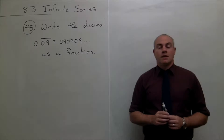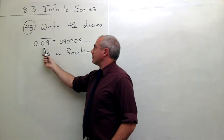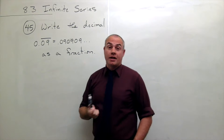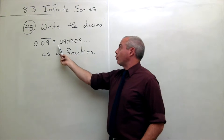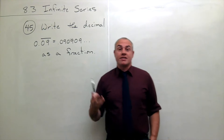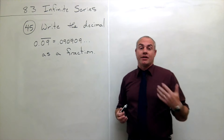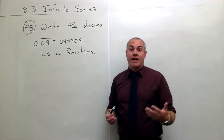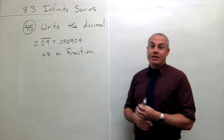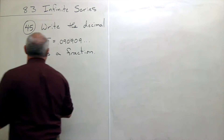I'm the calculus professor and today I'll be talking to you about infinite series. In problem number forty-five, I'd like to write the decimal 0.09 repeated — where both the zero and the nine are repeated, so 0.090909 and on forever — write that as a fraction. This is interesting because we know that repeating decimals can be written as fractions, those are rational numbers, but how do we do it?